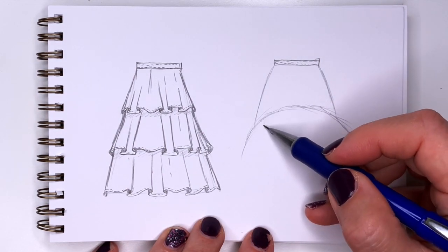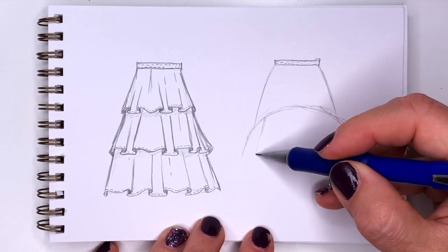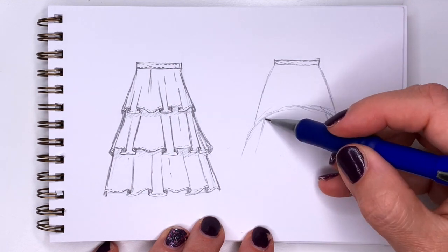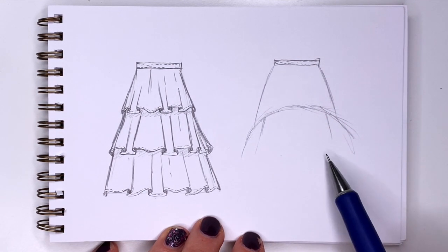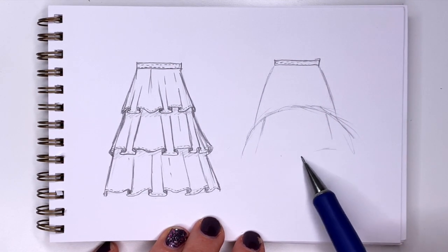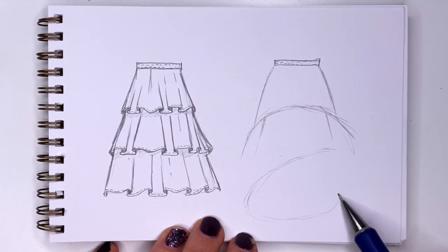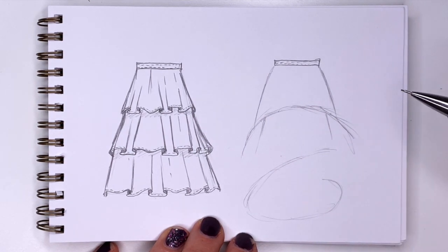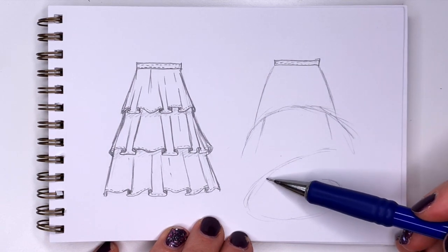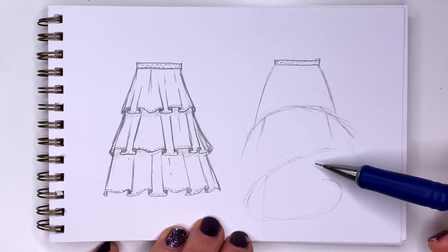And then the second tier will come out from under it. And this one I'm going to make turn like this and go behind the skirt. And finally in the center we can add a third tier.